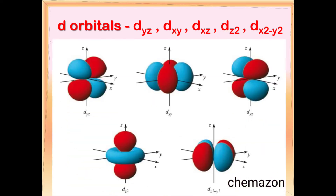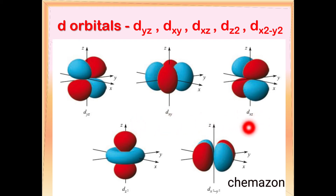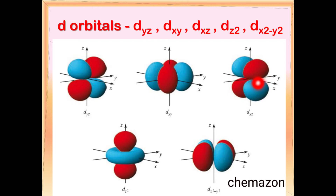Let us see the shapes of the D orbitals. Here you can see the DYZ orbital, which is oriented in between the Y and Z axes. The DXY is oriented in between the X and Y axes, and DXZ is oriented in between the X and Z axes. The DZ-squared orbital is oriented along the Z axis, and DX-squared-minus-Y-squared is oriented along the XY direction. So DXY, DYZ and DXZ are oriented in between the axes, whereas DZ-squared and DX-squared-minus-Y-squared are oriented along the axes.